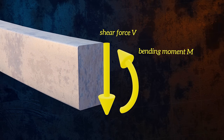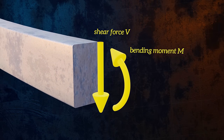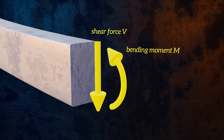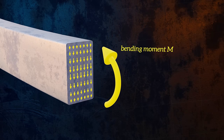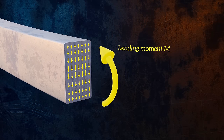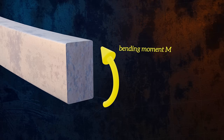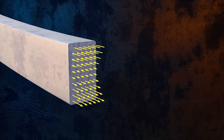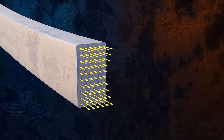The shear force is the resultant of vertical shear stresses, which act parallel to the cross-section, and the bending moment is the resultant of normal stresses, called bending stresses, which act perpendicular to the cross-section.